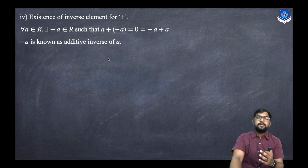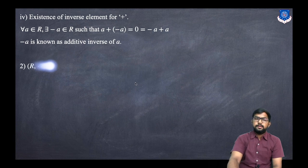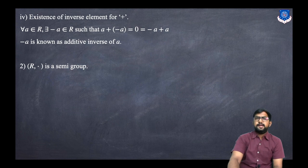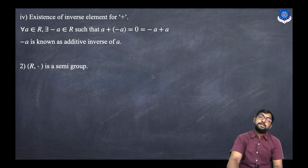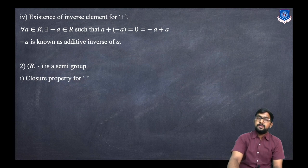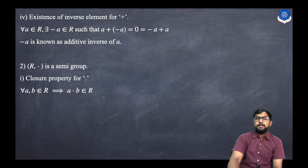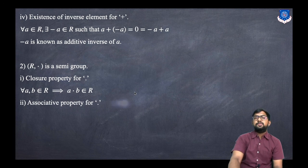The second axiom is that (R, ·) is a semi-group. For a semi-group, we need to check the closure property — which is obvious — and then the associative property.